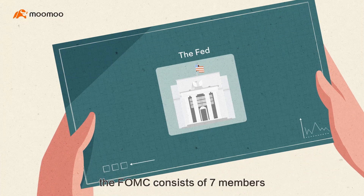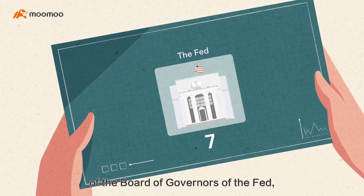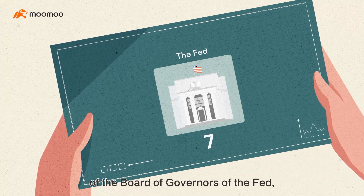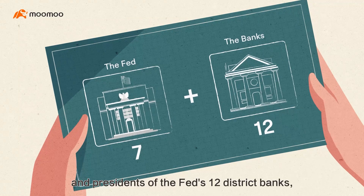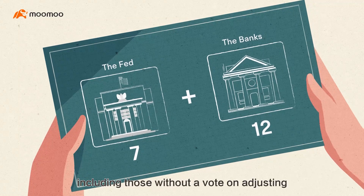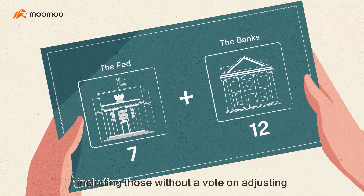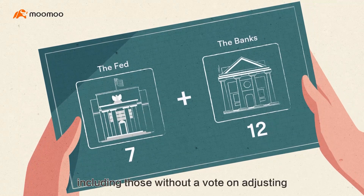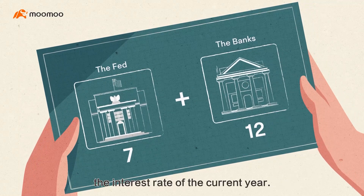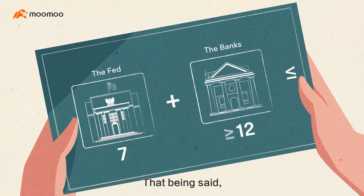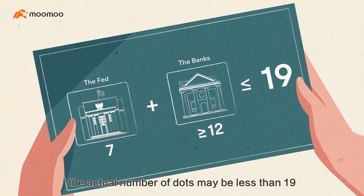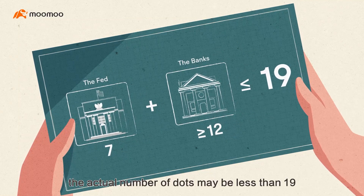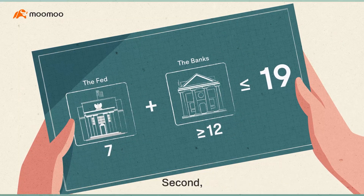Each dot marks where an FOMC — Federal Open Market Committee — member expects the funds rate to be. Generally, the FOMC consists of seven members of the Board of Governors of the Fed and presidents of the Fed's 12 district banks, including those without a vote on adjusting the interest rate of the current year. The actual number of dots may be less than 19 when there are vacancies.